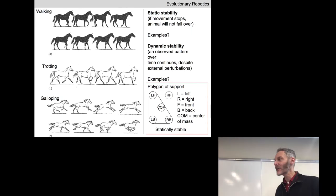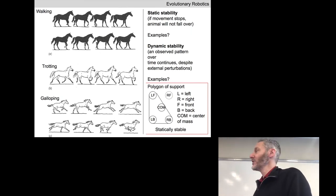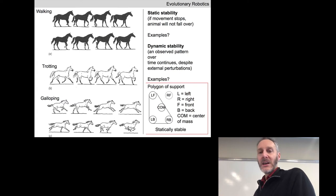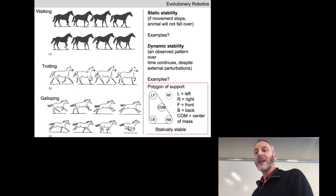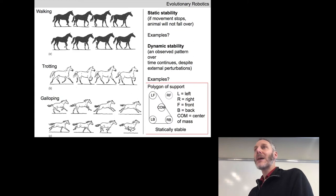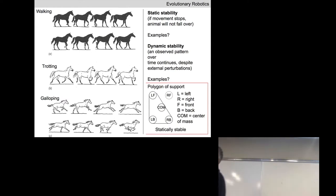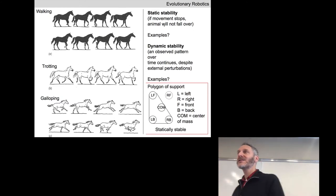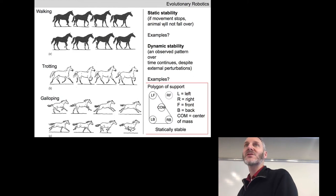Two more terms we'll use in our discussion of moving animals and eventually moving robots: static and dynamic stability. Static stability means that if at any point the animal or robot stops moving and becomes static, it is stable — it doesn't fall over. A gait that is statically stable means you can stop at any given moment and not fall over. There are certain gaits that are not statically stable — meaning if the animal or machine stops at that point in time, it's not going to maintain its balance.